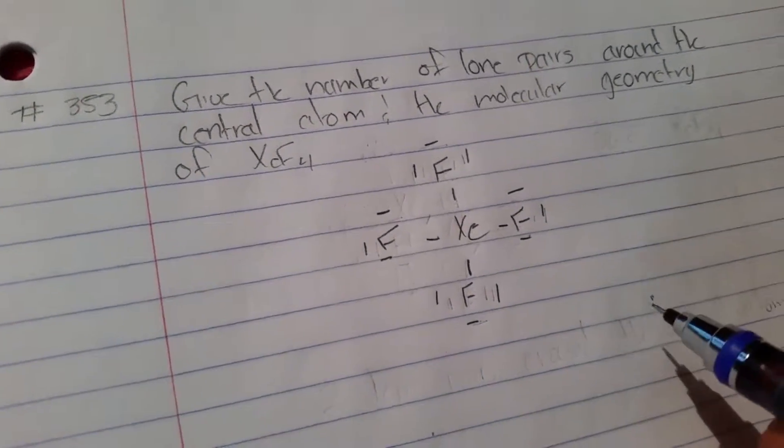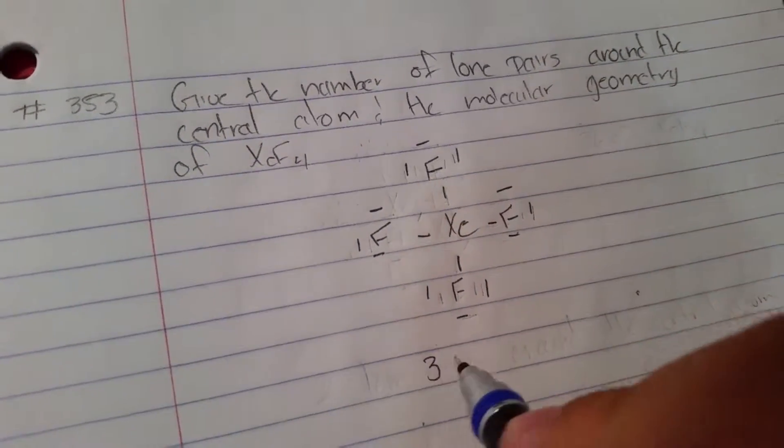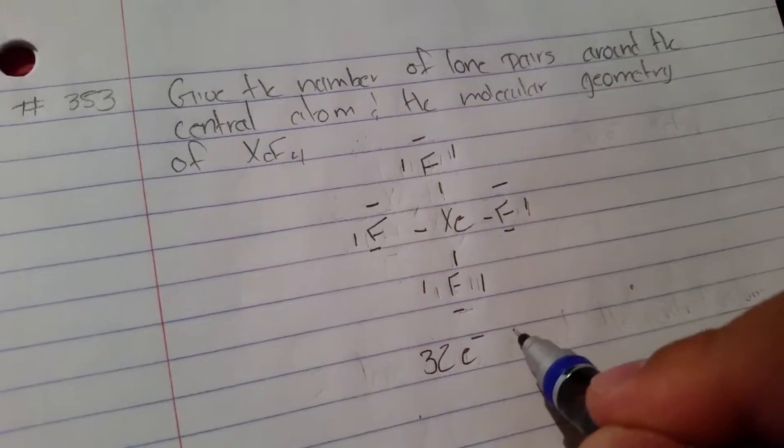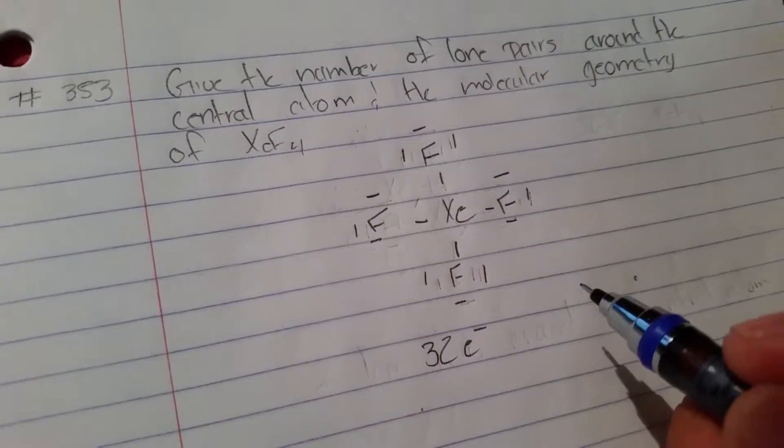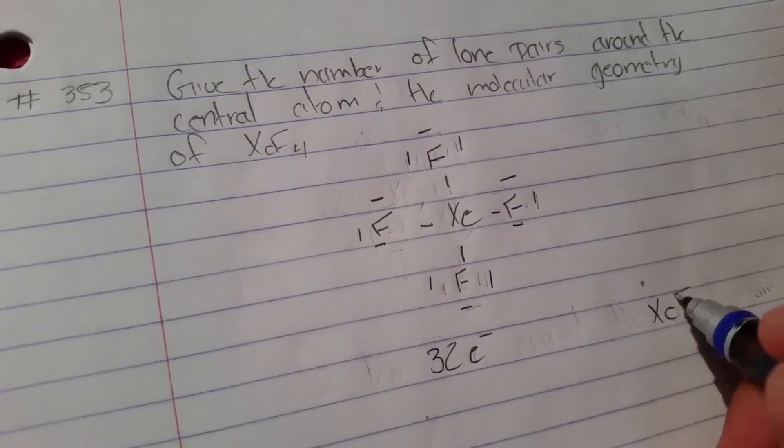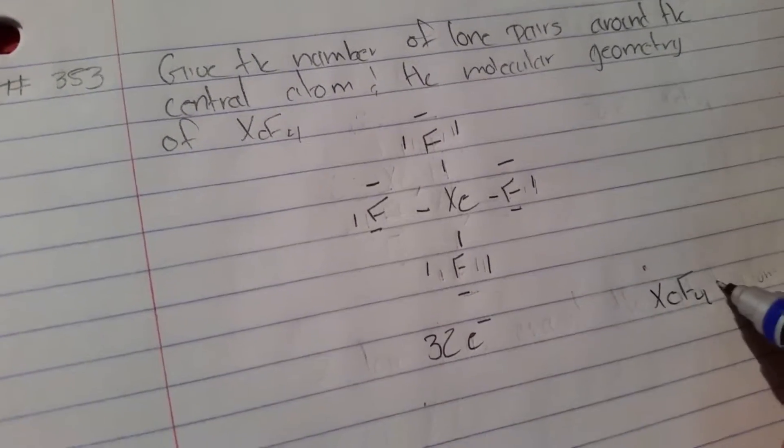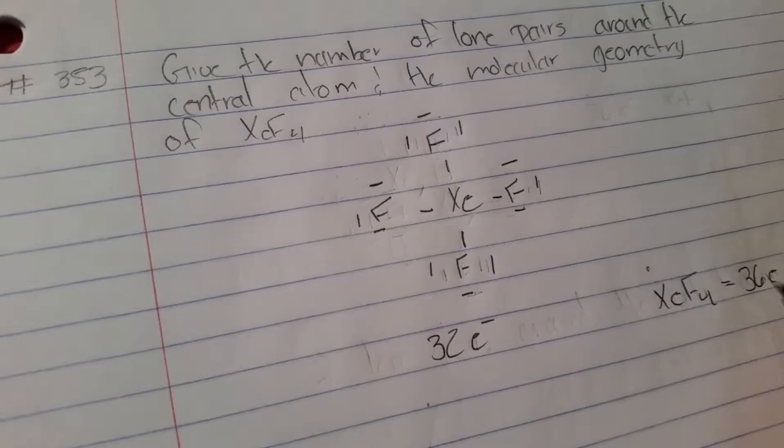And if you count that, you have a total of 32 electrons right here. That's how many you have right there. However, xenon tetrafluoride has 36 electrons.